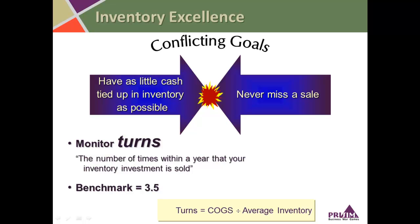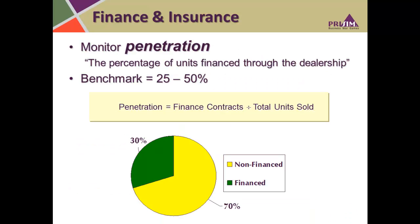Here's an operating metric that focuses on the finance side of the business: finance and insurance department penetration. It indicates the percentage of units sold that are financed through the dealership, calculated as finance contracts divided by total units sold. F&I sales generated through the financing arm can be an important source of profit for a dealership, and this metric gauges how well you're capitalizing on financing opportunities versus customers going outside your dealership. In the equipment industry, a benchmark is 25% to 50% — that is, 25% to 50% of units sold are also financed within the dealership.